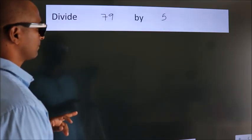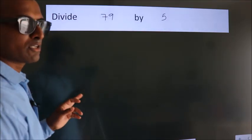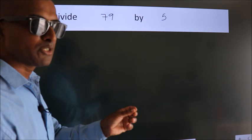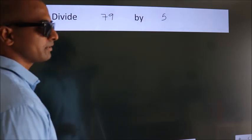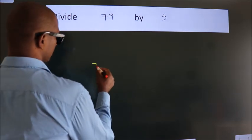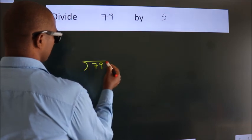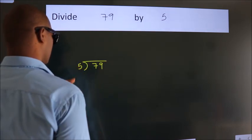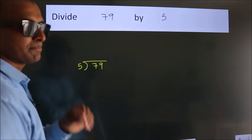Divide 79 by 5. To do this division, we should frame it in this way. 79 here, 5 here. This is your step 1.